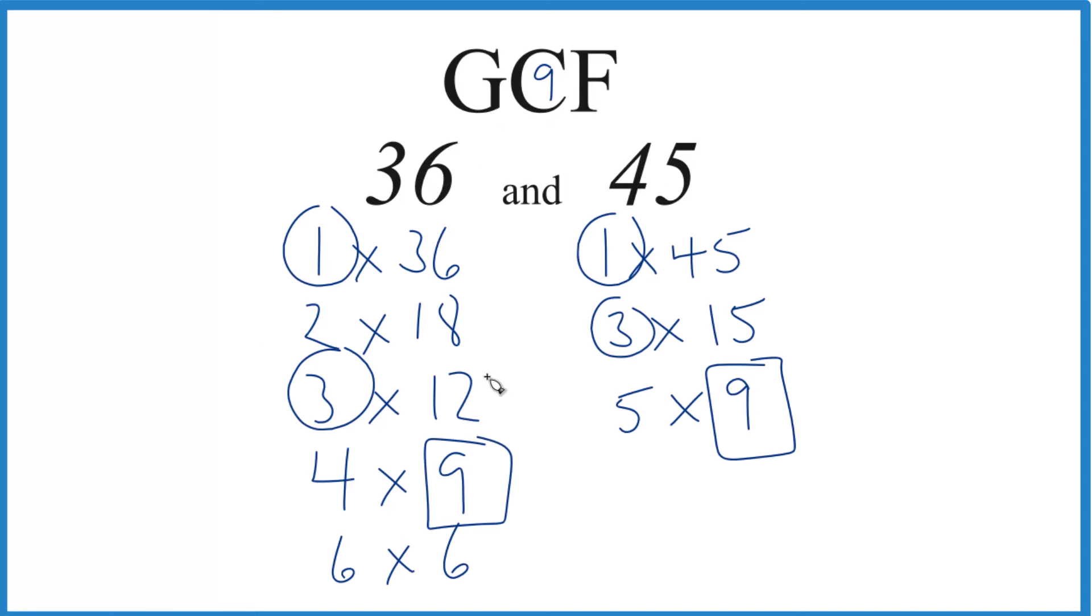You can do this other ways like prime factorization, but unless you have a real big number, this method works pretty well. This is Dr. B looking at the GCF for 36 and 45. And the answer is nine. Thanks for watching.